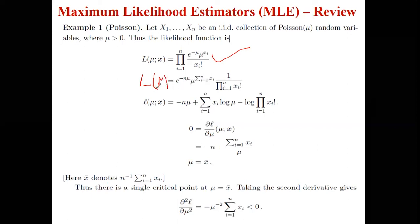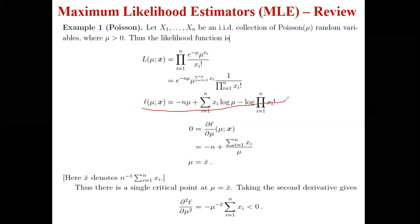Now we have the likelihood function with respect to mu. We take the natural log to get the log-likelihood. The ln of e gives 1, so we get: minus n, plus summation of x_i times log of mu, minus the log of the product of x_i factorials. This is our log-likelihood function. After differentiation with respect to mu, setting equal to zero, and simplifying — since the factorial term is constant with respect to mu — we proceed to solve.